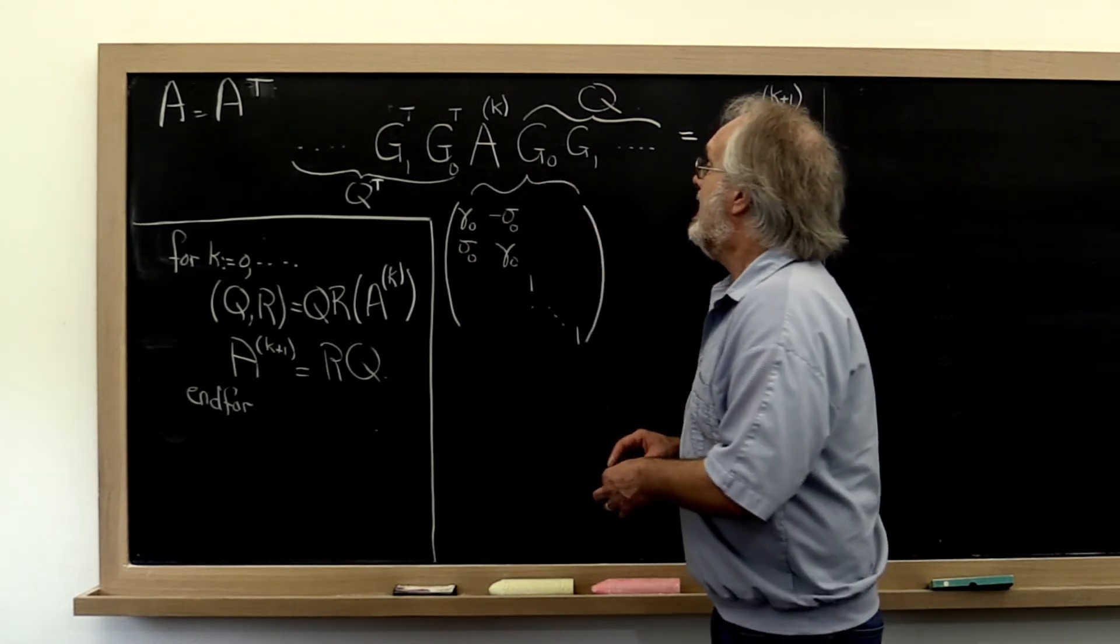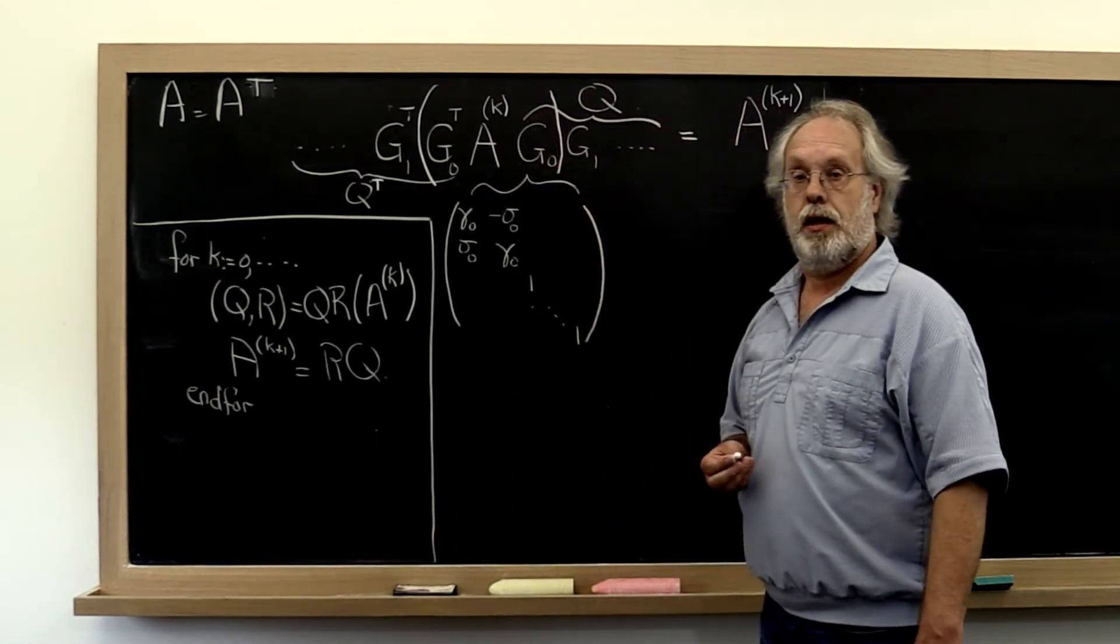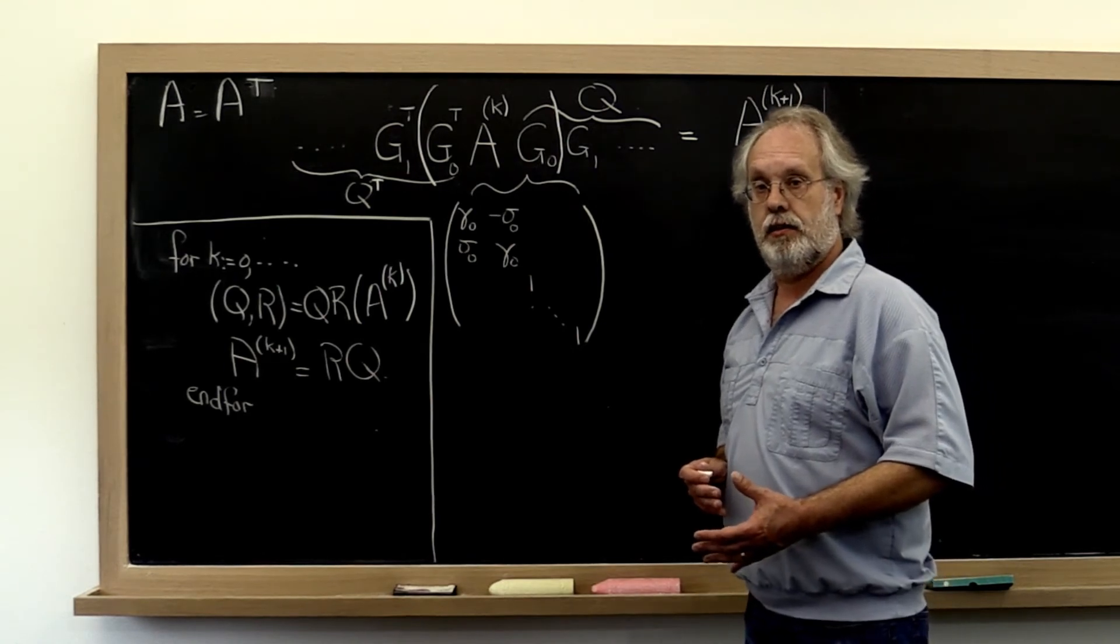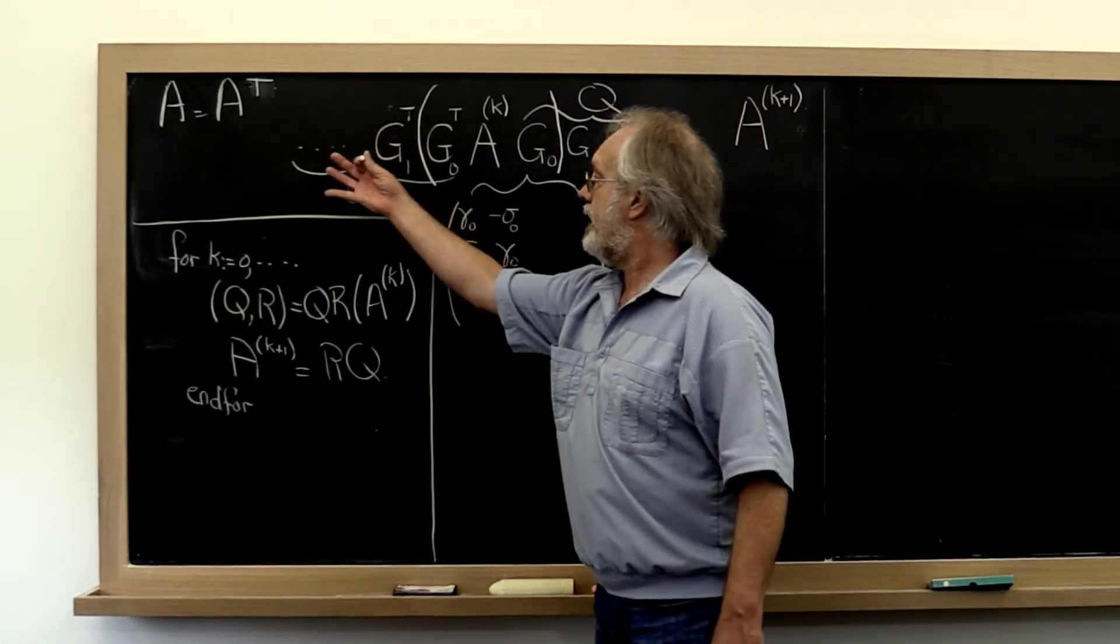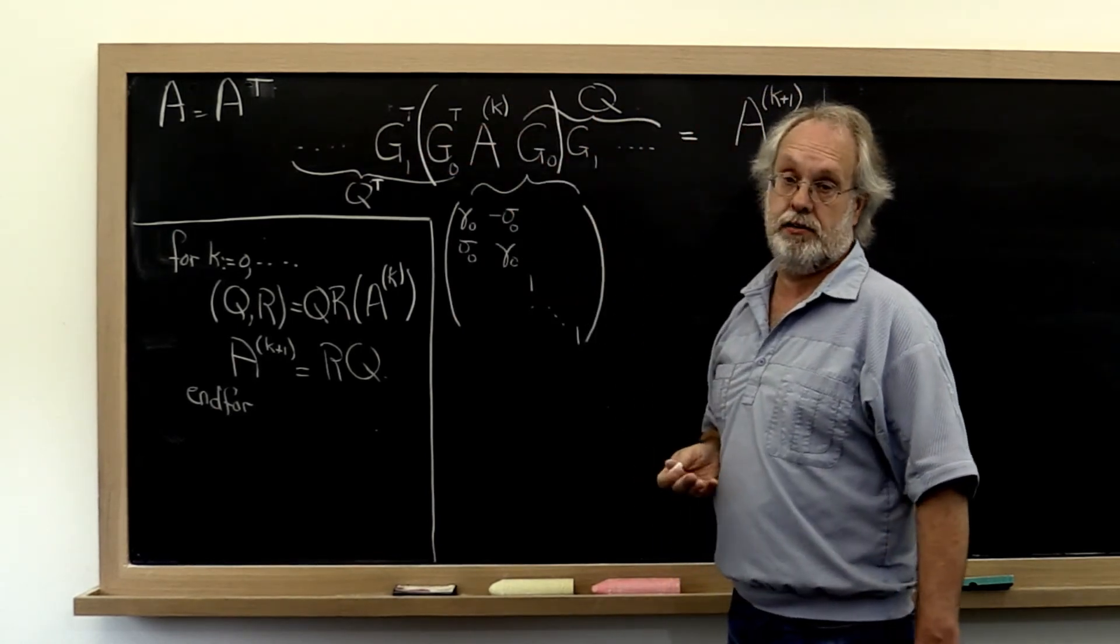So if we actually form this matrix right here, and then through whatever means we can find, figure out a way of applying unitary matrices from the left and equivalently from the right, their transposes,